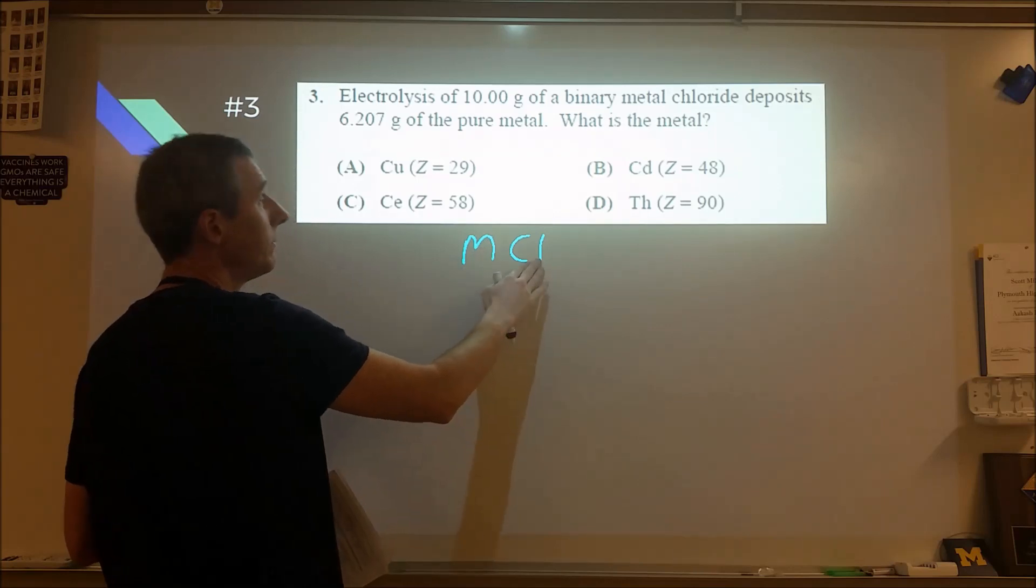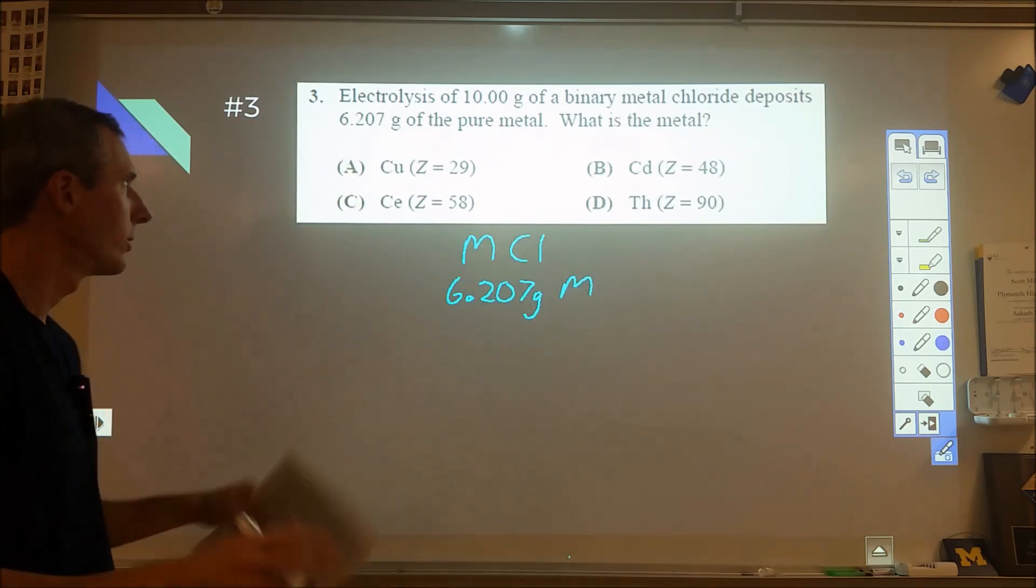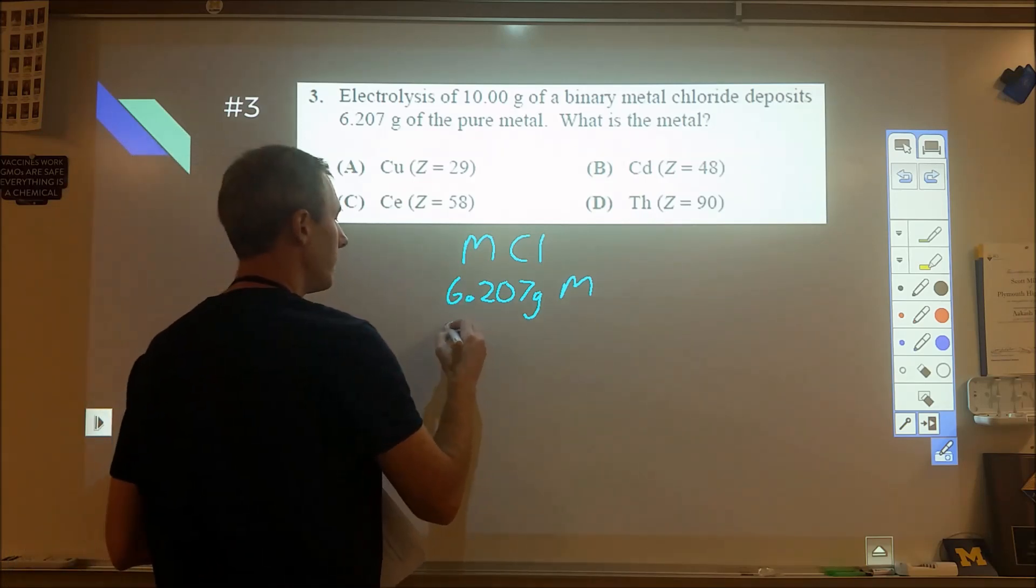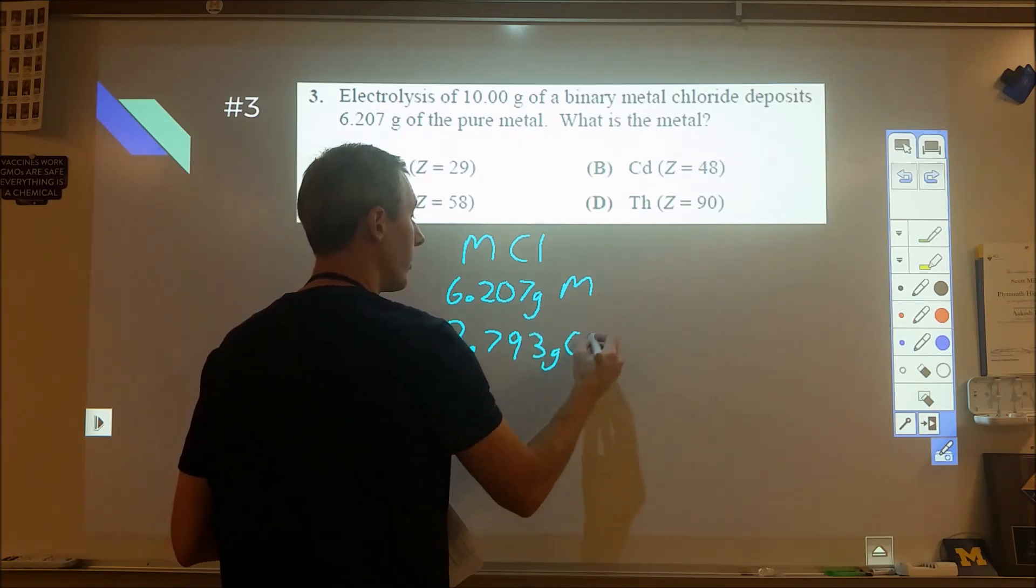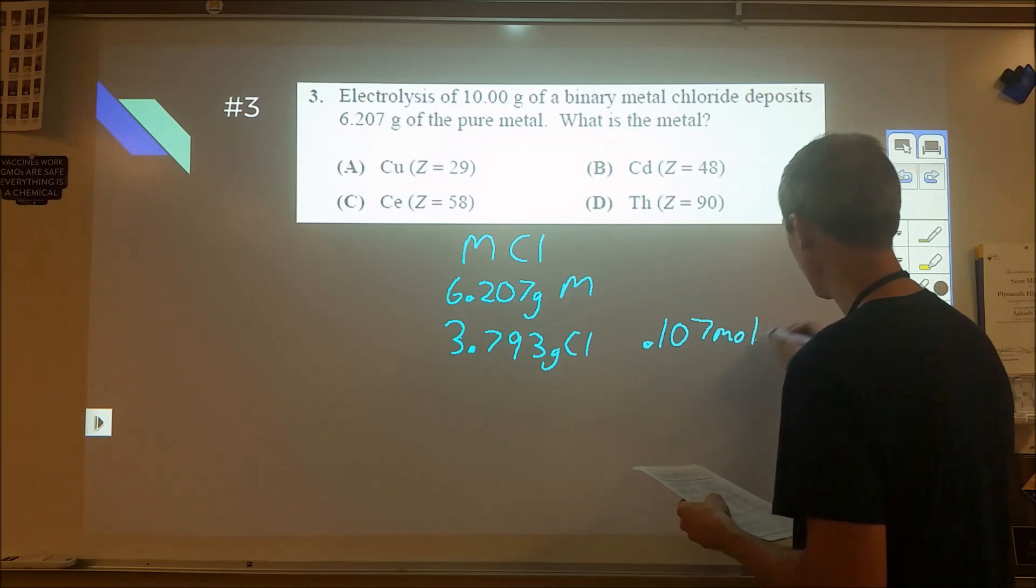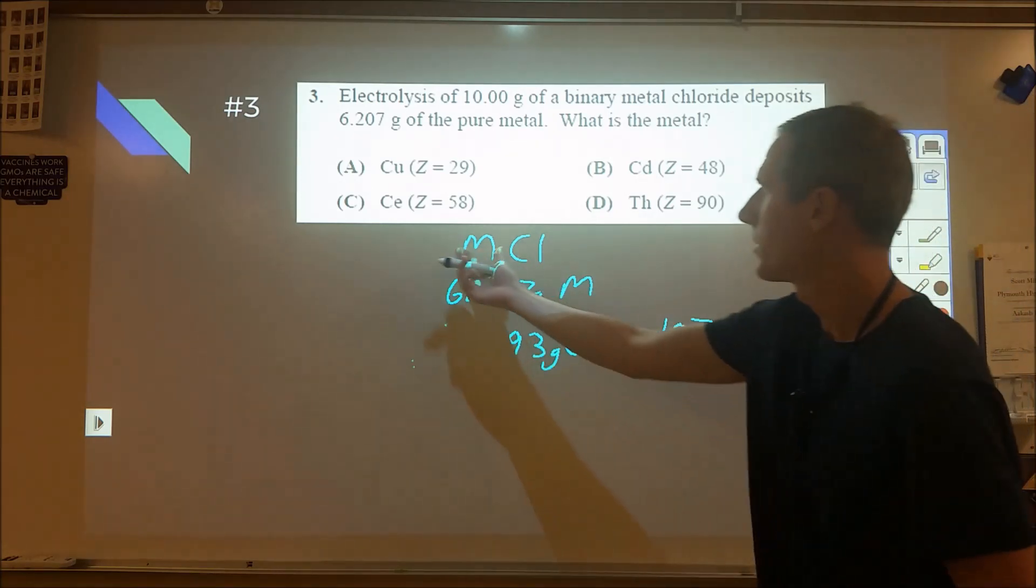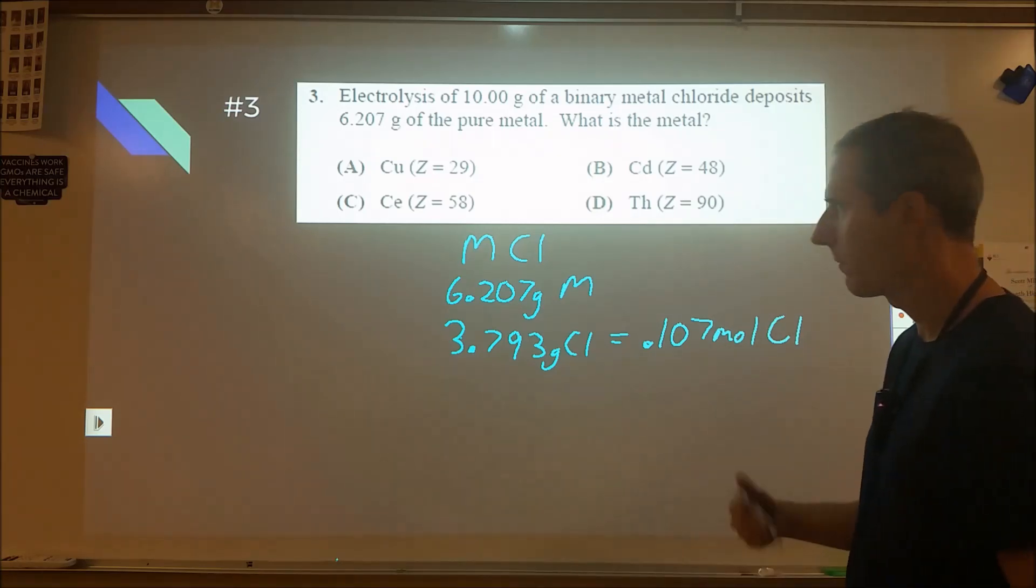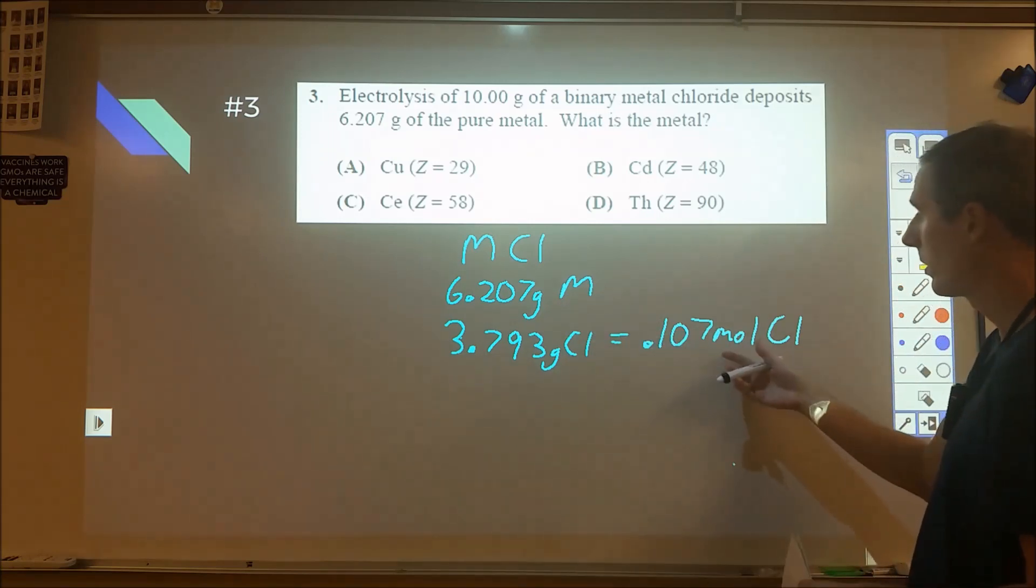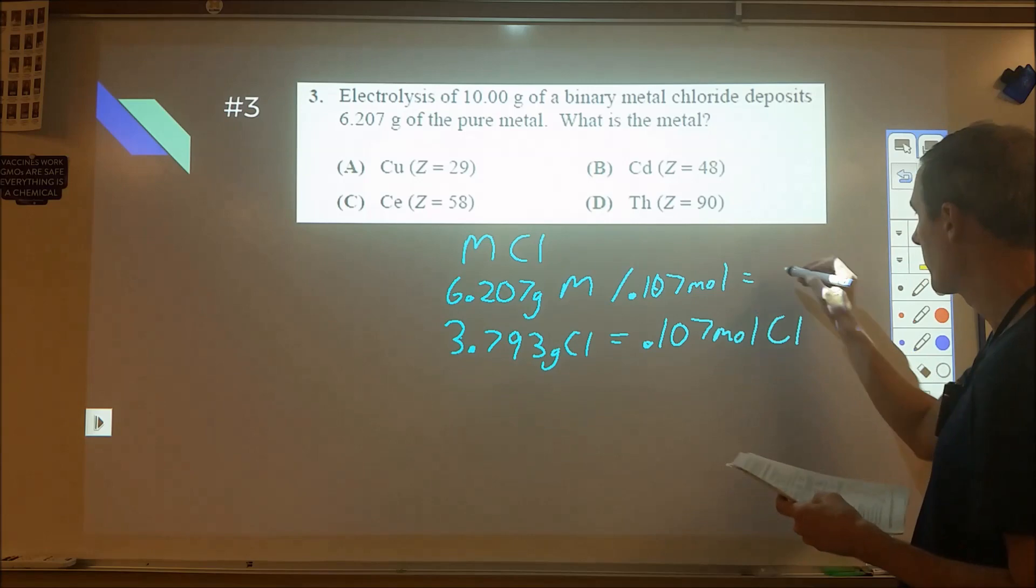We have 10 grams of metal and chlorine. 6.207 grams is the metal. We know the rest is chlorine, so 3.793 grams of chlorine. We can figure out the moles, dividing by 35.45, which is 0.107 moles of chlorine. I assumed a one-to-one ratio. I said 6.207 grams of the metal divided by 0.107 moles gives me a molar mass of about 58 grams per mole.